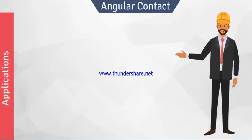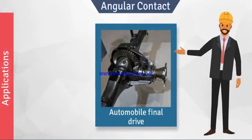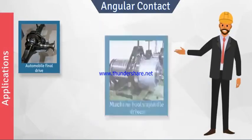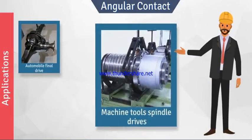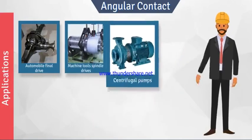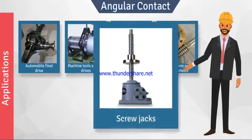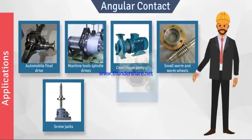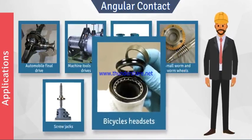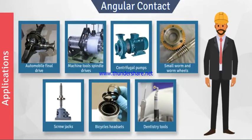Angular contact ball bearings are used in many places, such as in automobile final drives, machine tool spindle drives, centrifugal pumps, small worm and worm wheels, screw jacks, the headsets of most bicycles, and in dentistry tools where accuracy is essential.